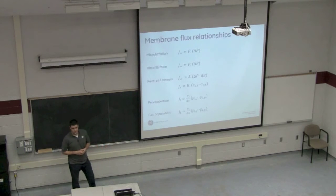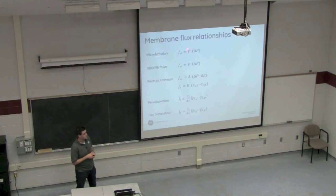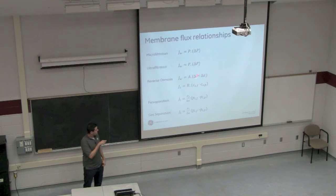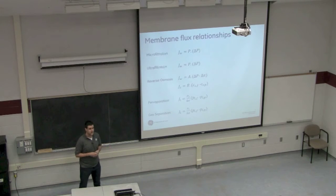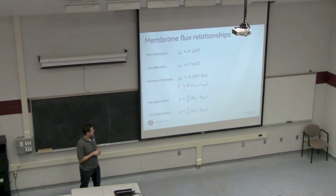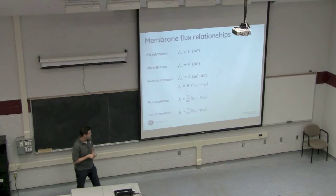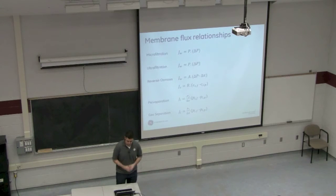Since this is an engineering class, here are some equations. For microfiltration and ultrafiltration, flux is proportional to a permeability coefficient and the pressure difference. In reverse osmosis, you see a difference between the flux of the water or solvent and the flux of the solute or salt. In RO we have to overcome the osmotic pressure before we can start permeating, and then pressure up to 80 bar. The water flux is proportional to pressure, but the salt flux stays constant. For more complex separations like pervaporation and gas separation, flux is based on partial pressures and an experimentally determined permeability coefficient.